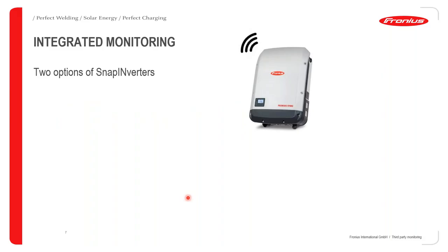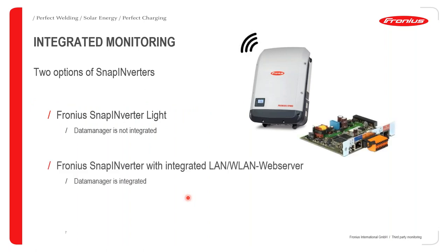Snap inverters come in two options when ordering: either a Snap inverter Lite, or the one integrated with LAN or Wireless LAN Web Server. It is important to note that the Data Manager is integrated in the LAN or Wireless LAN version. For the Lite version, there is no Data Manager, so it cannot perform any communication function.